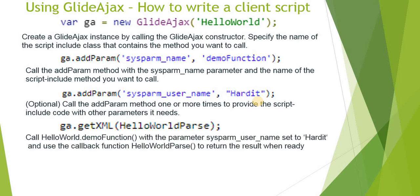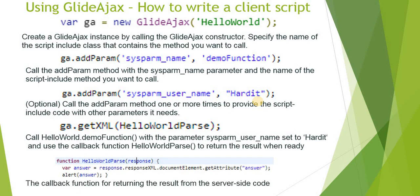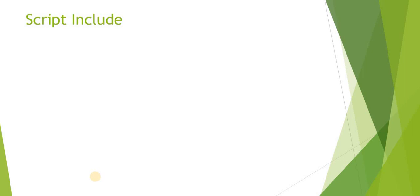Next is ga.getXML, which calls the demoFunction with the parameters and uses a callback function to return the results when they are ready. You define a callback function — I have named it helloWorldParse — and you receive the output in the 'answer' variable. You can then display it through an alert or use it wherever needed.